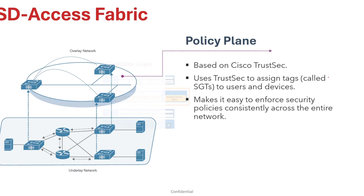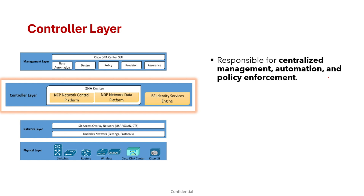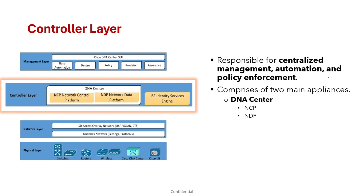Moving on to the controller layer — the previous layer was the network layer, which included overlay and underlay networks. The controller layer in SD Access is responsible for centralized management, automation, and policy enforcement. It comprises two main appliances: Cisco DNA Center and Cisco ISE. The controller layer consists of three main subsystems: NCP (Cisco Network Control Platform), NDP (Cisco Network Data Platform), embedded in DNA Center, and ISE (Cisco Identity Services Engine).